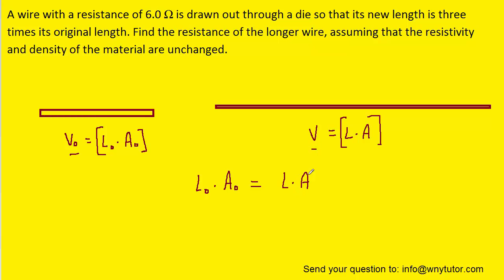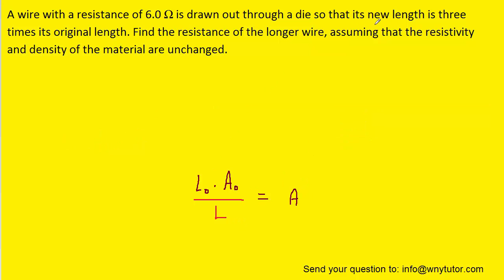We can solve this equation for the final area by dividing both sides of the equation by the final length, L. The question notes that the new length of the wire is equal to 3 times the original length. So we know that L is equal to 3 multiplied by L0. So we can replace L in the equation with that expression.